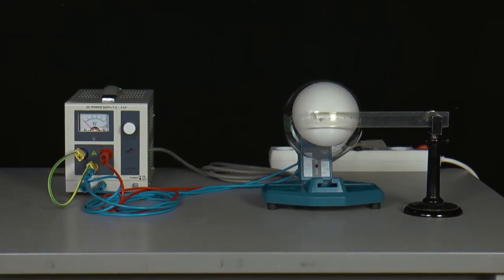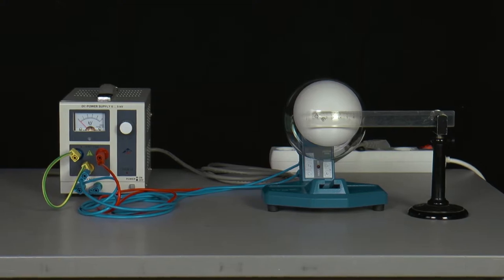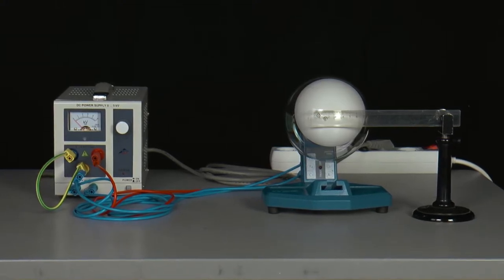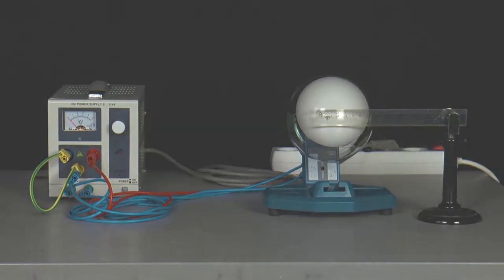Electron diffraction. With the experiment on electron diffraction, it can be shown that electrons, which are classically clearly classified as particles, have wave properties.